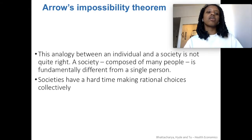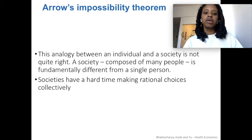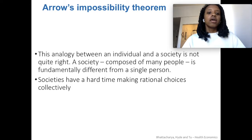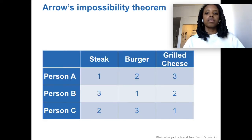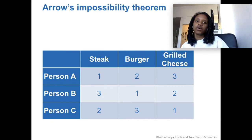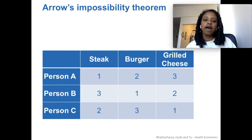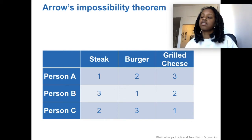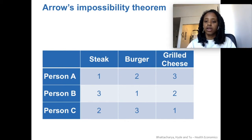The problem is that it's not a perfect analogy between the individual and society, because it's difficult to understand what society actually wants. Here's a basic example of the Arrow impossibility result: imagine there are three people in this society and they have to vote between eating a steak, a burger, and a grilled cheese.